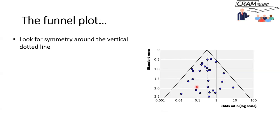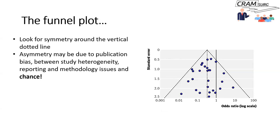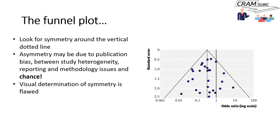Each blue dot refers to an individual study. The solid vertical line is the line of no effect — at one for ratios, at zero for differences. What you're doing is looking for symmetry around the vertical dotted line: if there are a fair number of studies on either side, you can say there's no obvious publication bias. If there's asymmetry, it could be due to publication bias, differences between studies, heterogeneity, reporting or methodological issues, or simply pure chance.